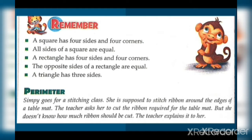The opposite sides of a rectangle are equal. A triangle has three sides. A square has four sides and four corners and all sides are equal. In a rectangle, there are four sides and four corners where opposite sides are equal. A triangle has three sides.